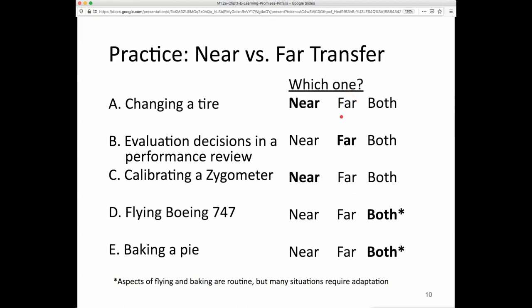So these distinctions are not perfect but there's a tendency that this is more routine. Making evaluation decisions when you're doing a performance review of a staff member as a supervisor, there's a lot of variation across different staff members, their performance, their styles and personalities. So doing that well requires problem solving adaptive skills to those variations, so that's a far transfer situation.